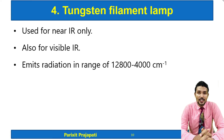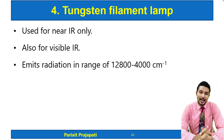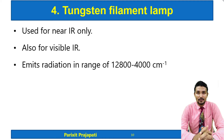The tungsten filament lamp is limited to near IR or visible IR only — not for mid IR — as it emits radiation in the range of 12,800 to 4,000 reciprocal centimeters.